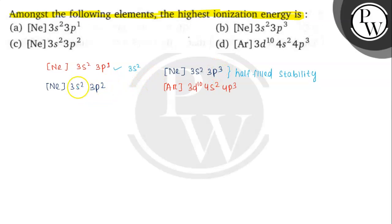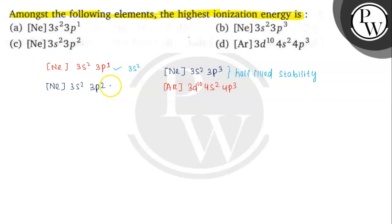Now for [Ne] 3s² 3p²: if we remove one electron, the ionization energy will not be high in this case. A better tendency for this configuration is to accept one electron to achieve half-filled stability and become stable. So this configuration does not have the highest ionization energy and is not the answer.